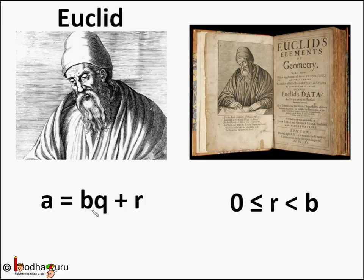where r is greater than or equal to 0 and less than b. It is called Euclid's Division Lemma.